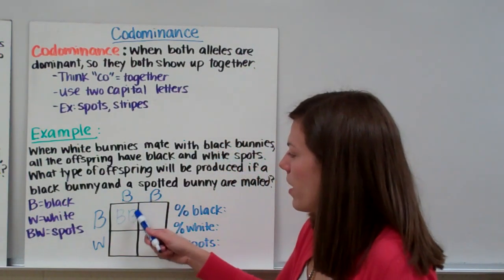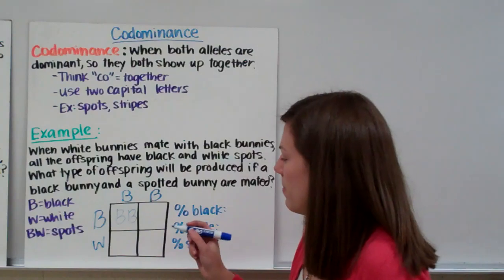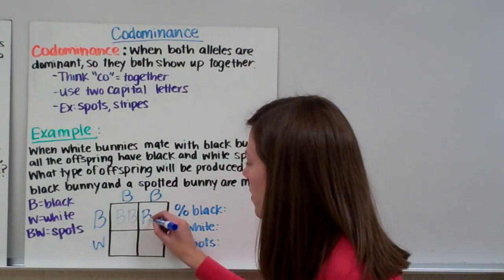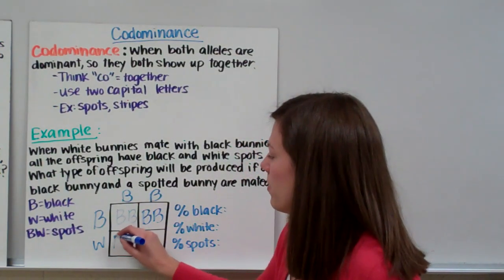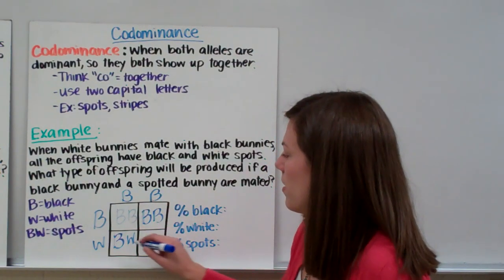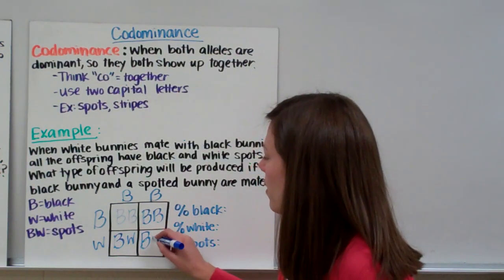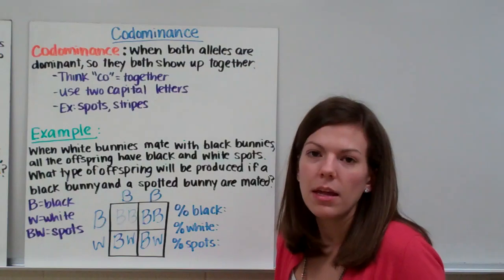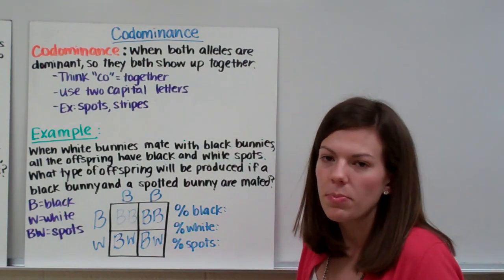In this first square, we line up our B and our B, so we get BB. Same with our second square. The next one, we get BW, and then BW. And again, if you write WB, it means the same thing as BW - it's still spots.